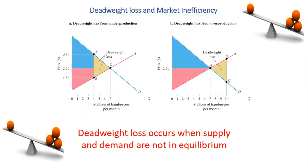The second case is dead weight loss from overproduction. The figure shows the consequences of producing 10 million instead of 7 million hamburgers, which is the equilibrium. Here the full cost of production rises above consumers' willingness to pay — you can compare point C, which represents the willingness to pay, and point B, which represents the cost. We will have a dead weight loss represented also by triangle ABC.